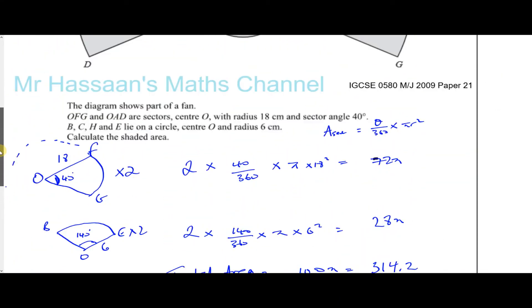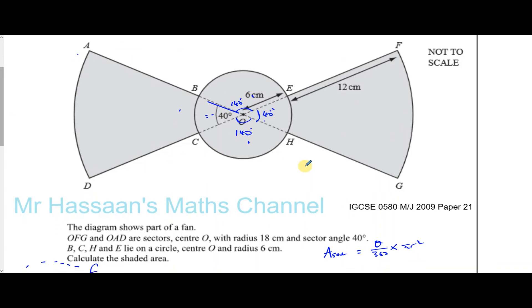This question could have been answered in different ways. I think the easiest way is what I did: taking this sector, multiplying by two, taking this sector, multiplying by two, and adding together. Some people might take the area of this circle and add the area of this shape, but then you'd have to find the area of the big sector and subtract the small sector. I think there's more hassle involved there.